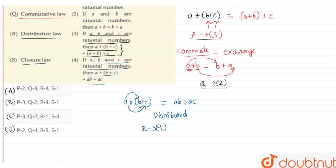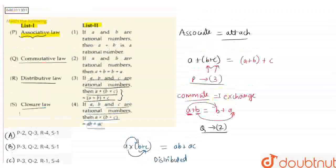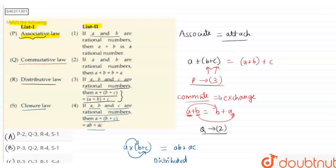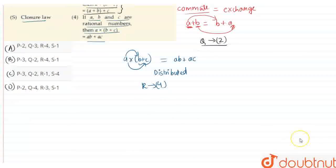For option S, the closure law states that if A and B are rational numbers, then A plus B is also a rational number. This is a simple definition. For S, the answer is 1.